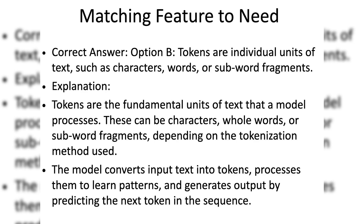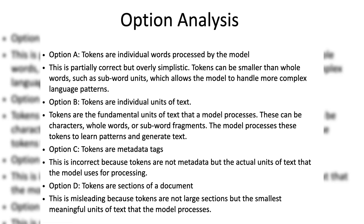Now match the feature to the need. Identify that tokens are related to text generation and processing, which aligns with Option B. Looking at Option A — tokens are individual words processed by the model — this is partially correct but overly simplistic. Tokens can be smaller than whole words, such as sub-word units, which allows the model to handle more complex language patterns.